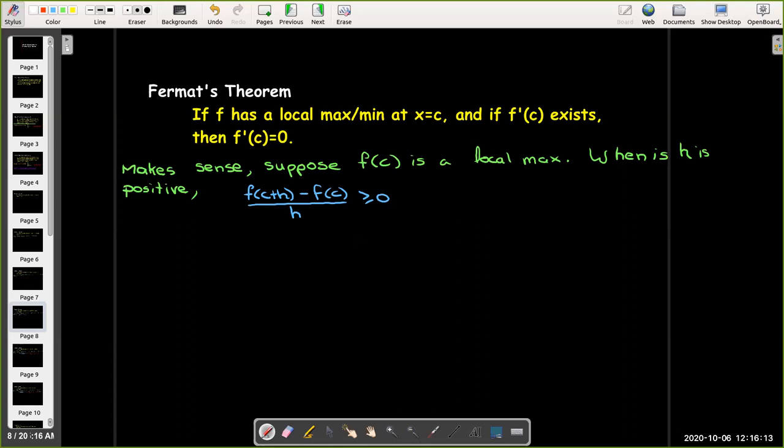We're saying that f(c) is going to be a local min. Let me change this to a local min, because I want that to be greater than or equal to 0, because then c was always going to be smaller than f(c+h). h is a positive number, so I have a positive number over a positive number. That'll be greater than or equal to 0.